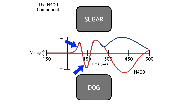The initial sensory processing is the same for the two words, but the semantically incongruous word elicits this big N-400 wave, peaking around 400 milliseconds after the onset of the word. The N-400 appears to reflect the work your brain is doing as it tries to figure out what the word is and how it fits into the sentence. If more work is needed, you get a larger N-400.